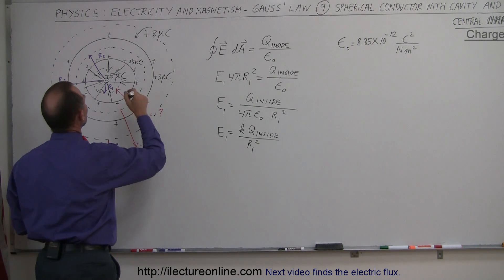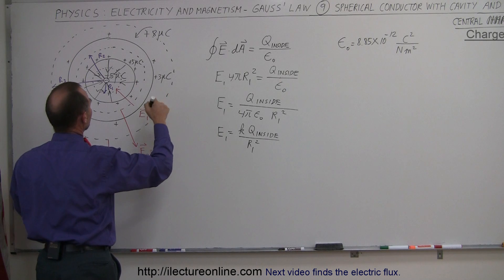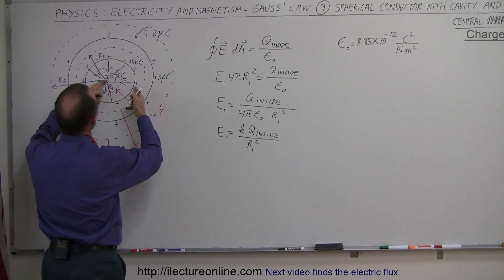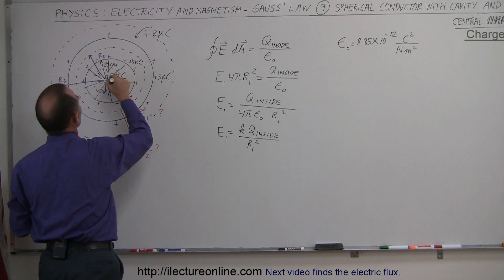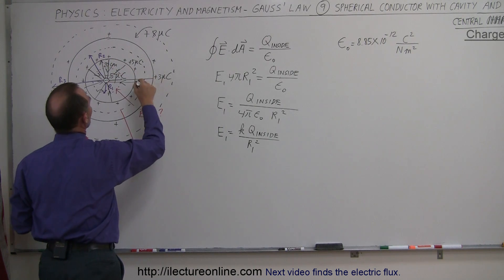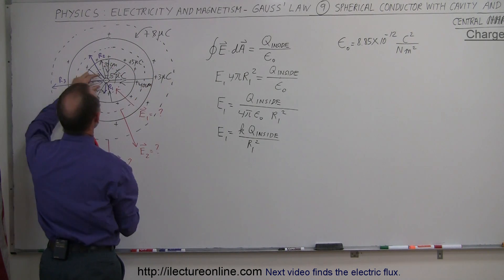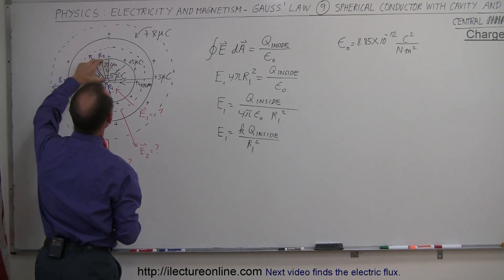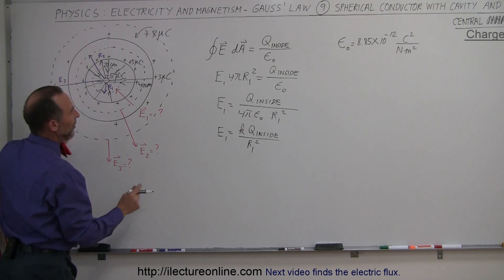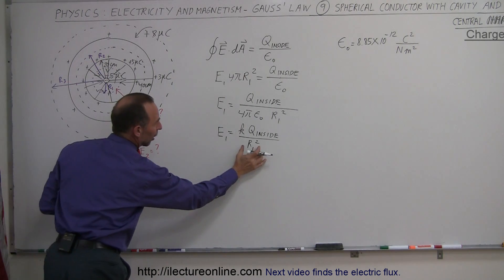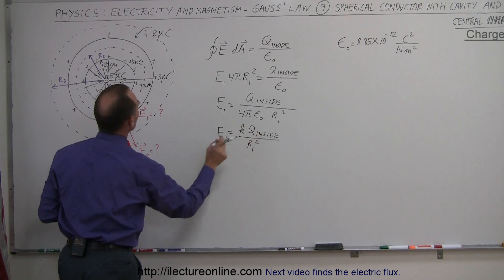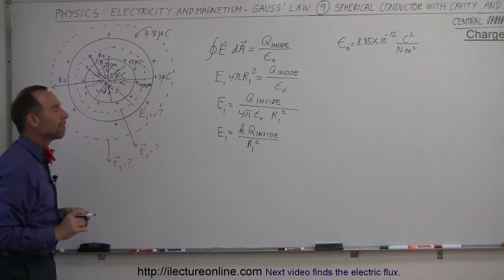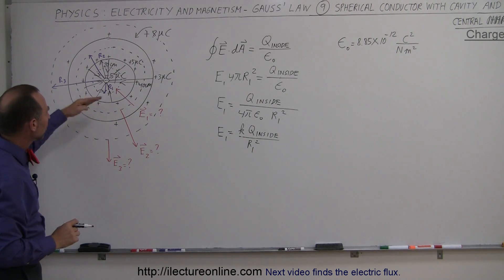Let's say that the inside radius — the radius of the cavity — is 20 centimeters, and the outer radius of the conductor is 40 centimeters. So inside the cavity, R1 ranges anywhere from 0 to 20 centimeters. K is 9×10⁹, and Q inside is minus 5 microcoulombs.